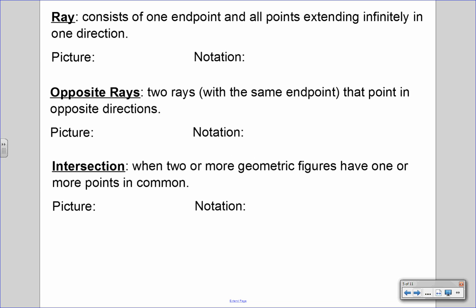Up next is a ray. It consists of one endpoint and then all points extending infinitely in one direction. We draw one endpoint, and the arrow signifies that it goes on forever, infinitely. A ray has to have at least two points. When we name a ray, we always have to start with the endpoint. So we name it ray AB. We cannot name it ray BA because it's not going infinitely in the direction of A — it's going infinitely in the direction of B. So the only notation for this is ray AB.